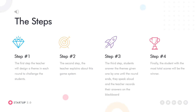Let's continue to the discussion and steps in operating this method. The first step: the teacher will design a theme each round to challenge the students. The second step: the teacher explains the game system as mentioned at the beginning. The third step: students answer the themes given one by one until the turn ends — they speak aloud and the teacher records their answers on the blackboard. Finally, the student with the most total score will be the winner.